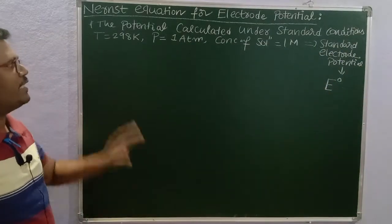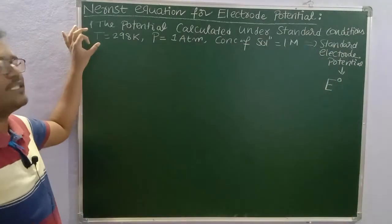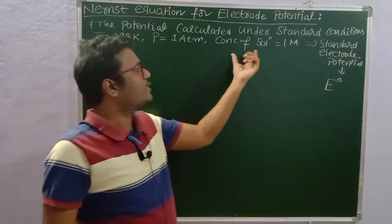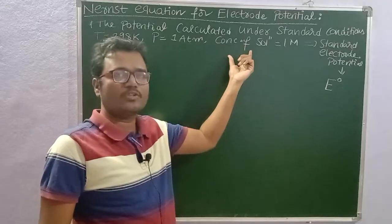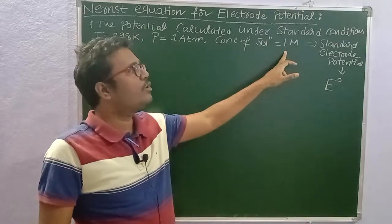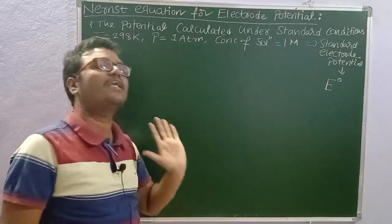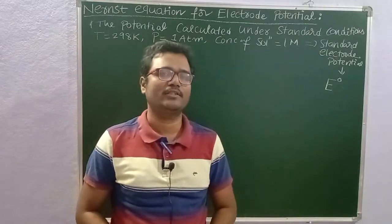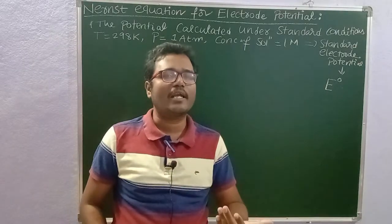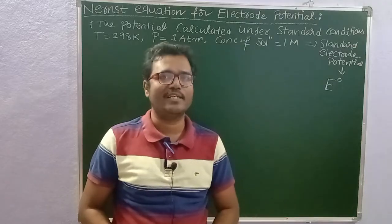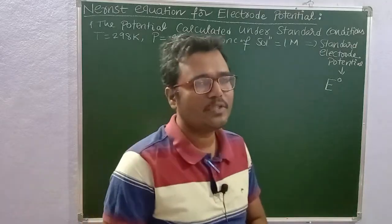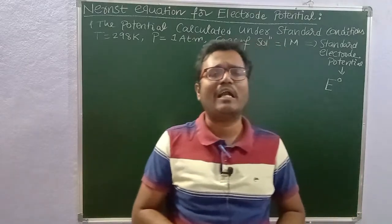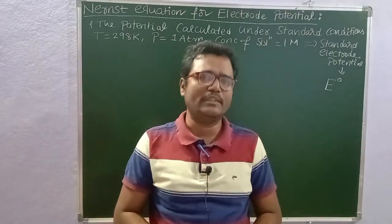In general, it is not possible to keep the temperature at 298 Kelvin, pressure at 1 atmosphere, and concentration of the solution at 1 mole. So we are going to deviate from the standard condition — those conditions are called non-standard conditions. Under non-standard conditions, the electrode potential will change, so we need an equation to calculate electrode potential under non-standard conditions.